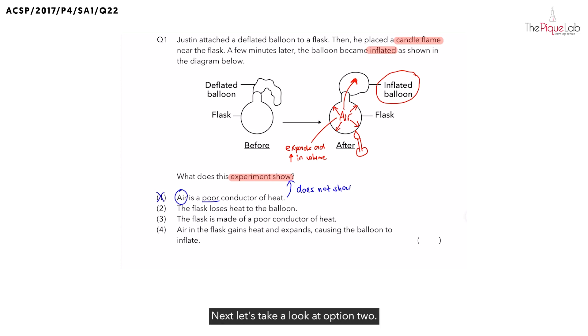Next, let's take a look at option two. They said the flask was the one that lost heat to the balloon. Now, does this have anything to do with the flask? Definitely no. So we can cross out option two.